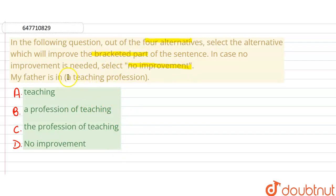This is a bracketed part. If there is a bracketed part, we will choose A, B, or C. If there is no need for improvement in this bracketed part, that means if the bracketed part is correct grammatically or contextually, we will choose no improvement, that is option D.